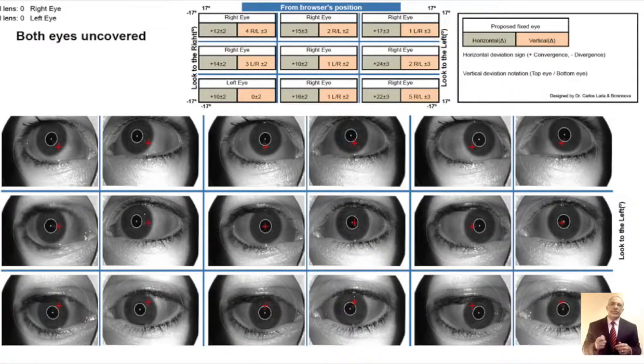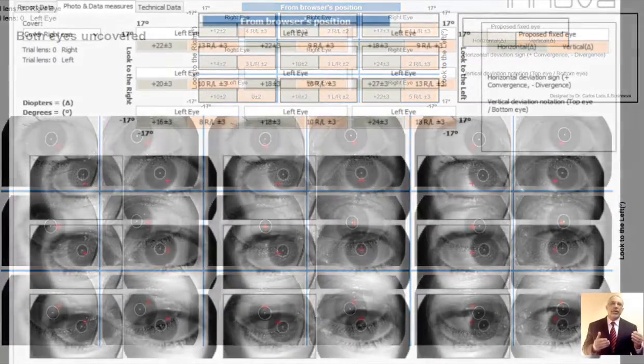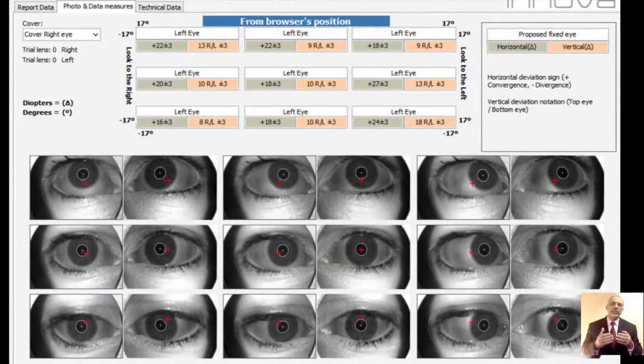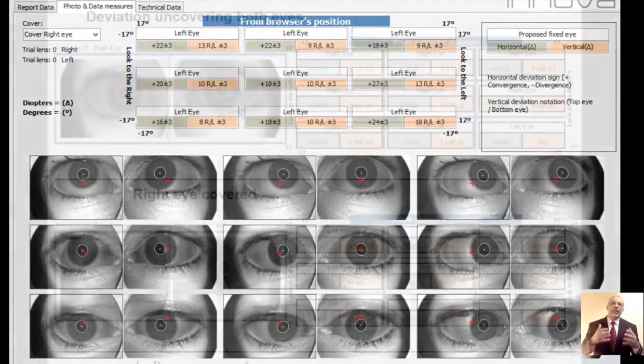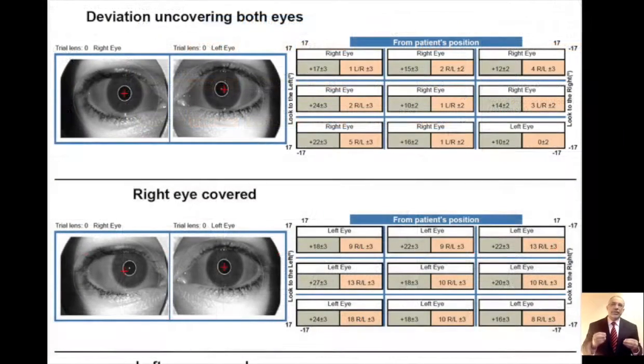You will get nine-gaze position, five-gaze position, you will get three tests and you will get both eyes uncovered, right eye covered, left eye covered. You have horizontal deviation, esotropia, exotropia, cyclotorsion, incyclotorsion, excyclotorsion. You have a lot of data and everything can be used for analyzing each muscle accurately at any point in space.